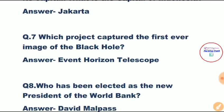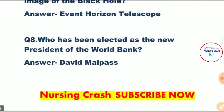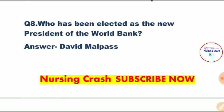Question number seven: Which project captured the first ever image of a black hole? Answer is Event Horizon Telescope. Astronomers took the first ever image of a black hole located in a distant galaxy. It was captured by the Event Horizon Telescope (EHT), a network of eight linked telescopes. It measured 40 billion kilometers across and has been described by scientists as a monster.